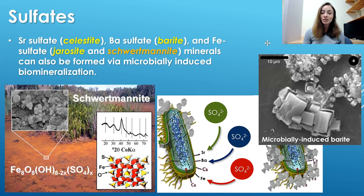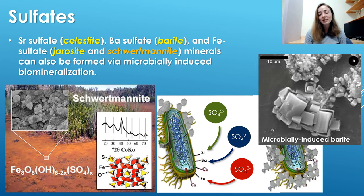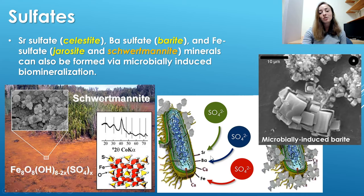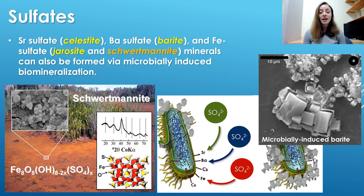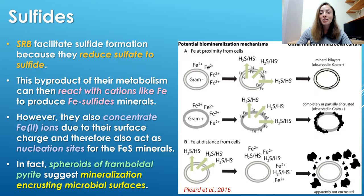These laminae preserve so well that we can tell seasonal changes, variations, and durations from them. Other sulfate minerals that microbes can induce the formation of include celestite (strontium sulfate), barite (barium sulfate), and iron sulfates such as jarosite and schwertmannite. These form in the same general way as most microbially induced minerals: sulfate anions are attracted to the cation-laden surfaces of cells for nucleation sites, and some cells may even provide ions via their metabolism for the sulfate to react with.